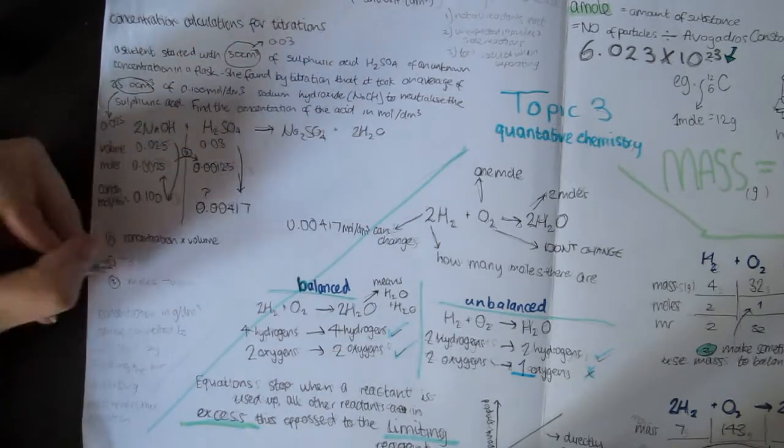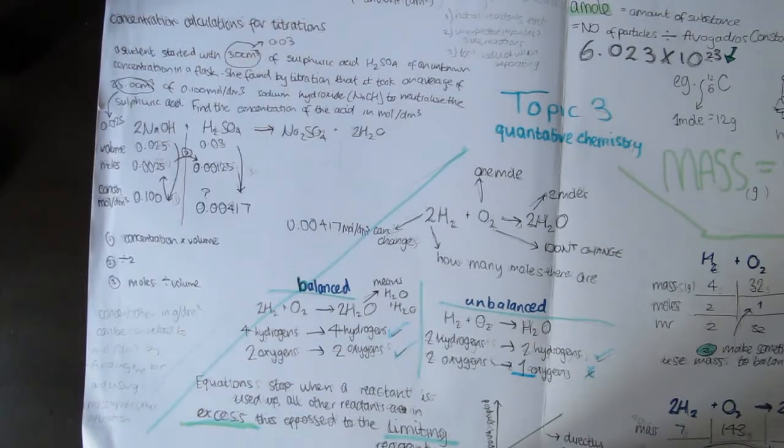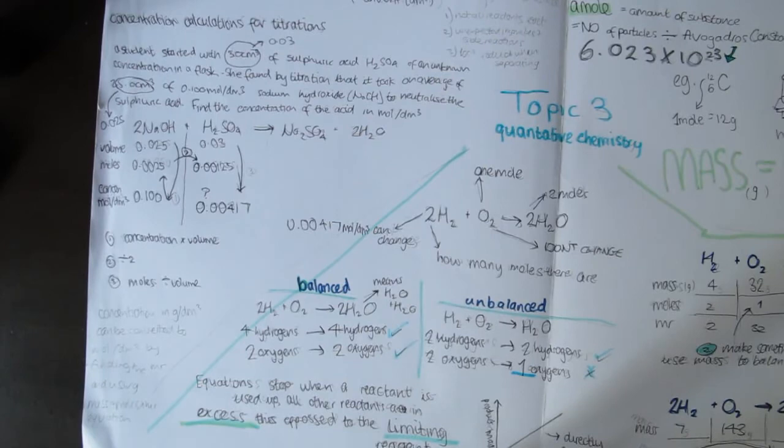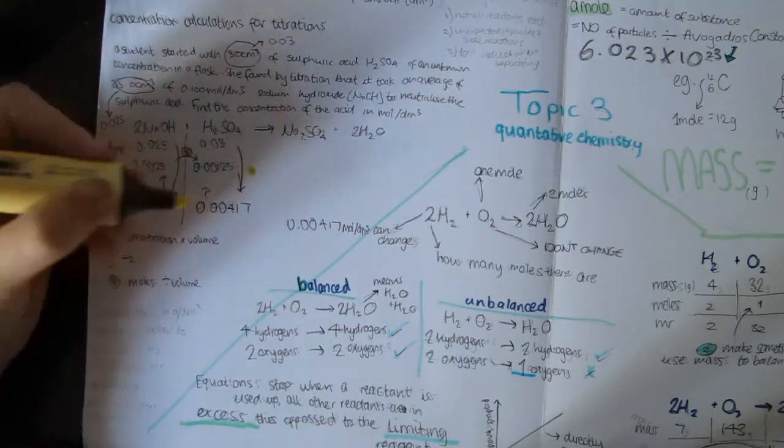Concentration in grams per decimetre cubed can also be converted to concentration of moles per decimetre cubed by finding the MR of the substance and using the mass equals moles times MR equation.